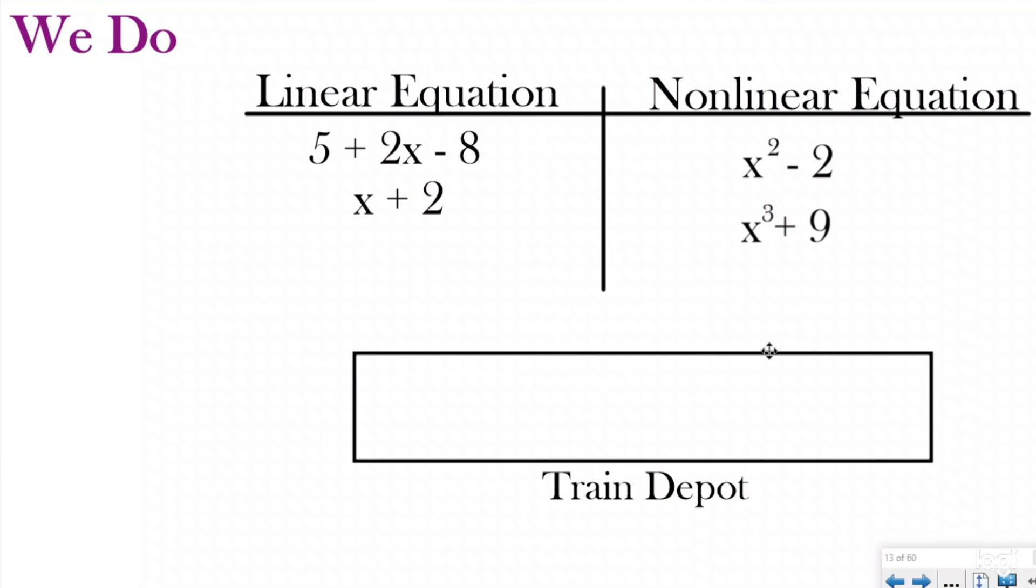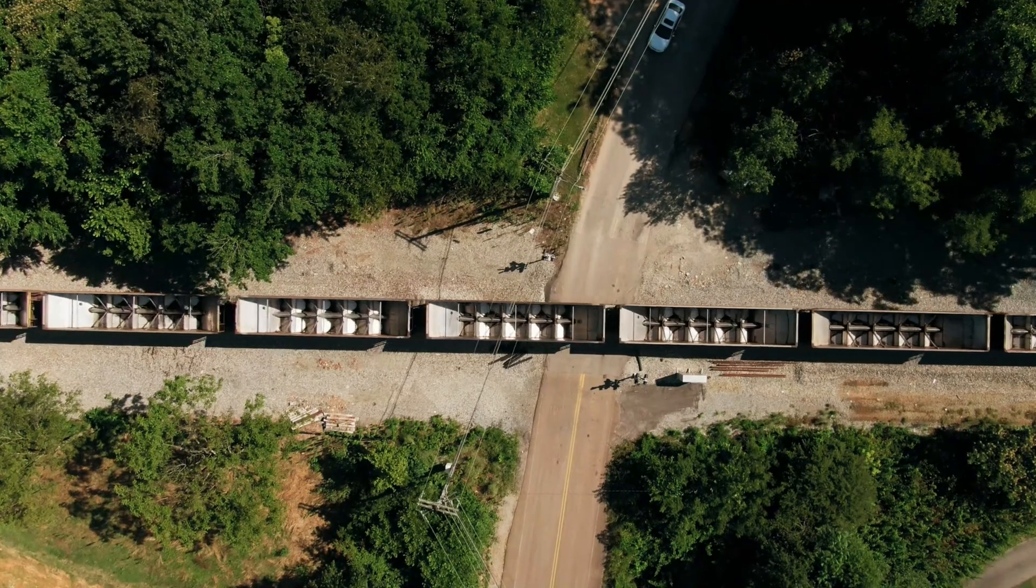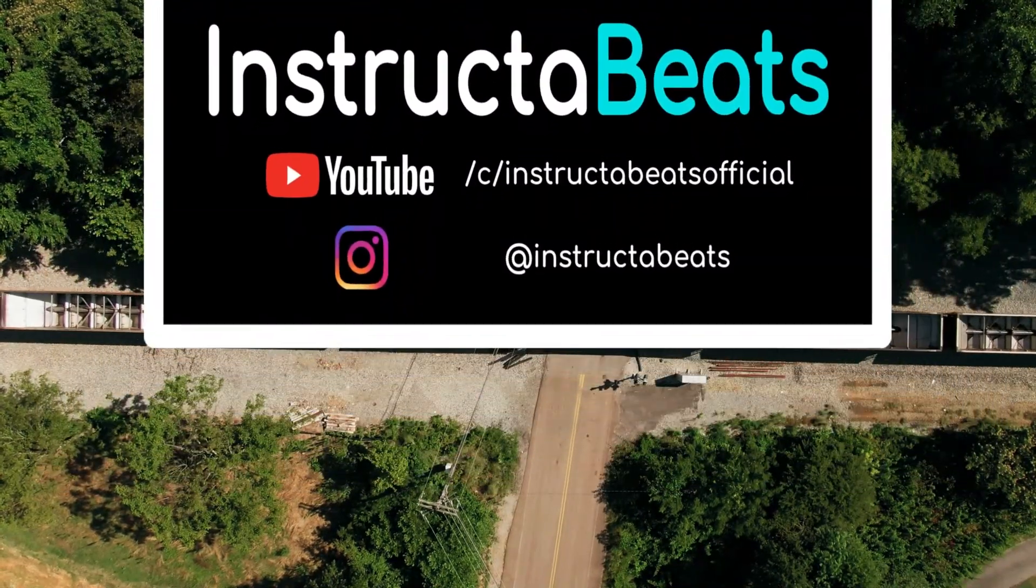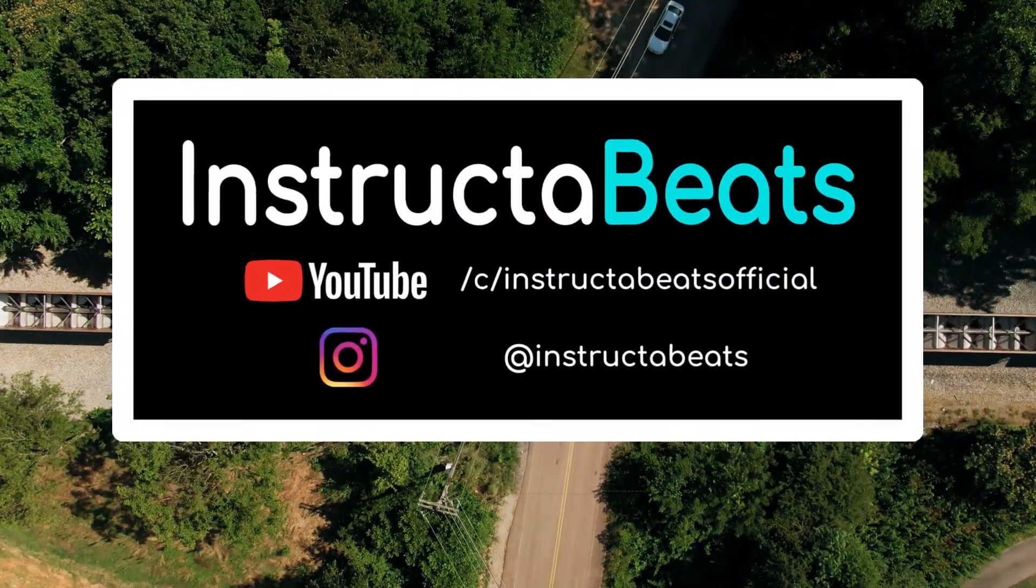Again, we're not getting into this in this playlist, but our linear equations are going to graph as a straight line when you graph them, and our nonlinear equations, because they have an exponent 2 or higher, are actually going to graph as a curve. Hopefully this has been enlightening to you, learning a little bit about linear and nonlinear equations. We're going to continue talking about linear equations for the rest of our playlist.